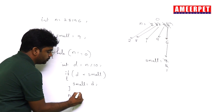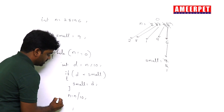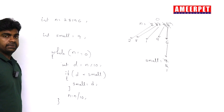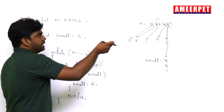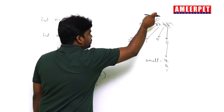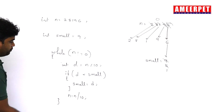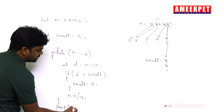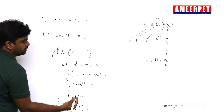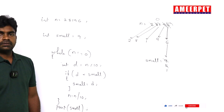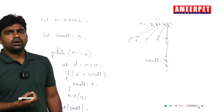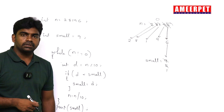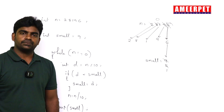So N equals N divided by 10. This loop will repeat until the number becomes zero, and finally you are printing the smallest digit in the given number. This is the simple way of finding the smallest digit in a given number. Hope you understood, thank you.